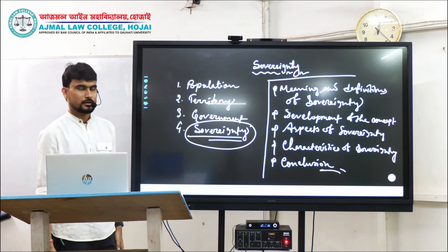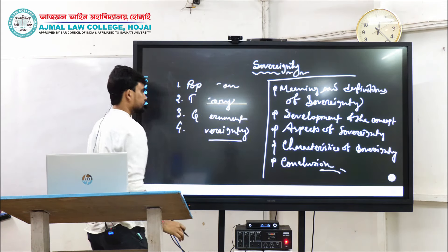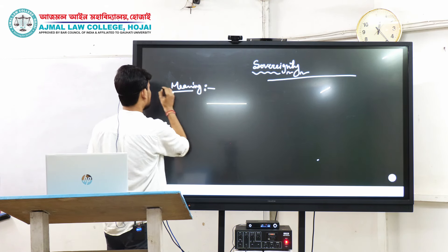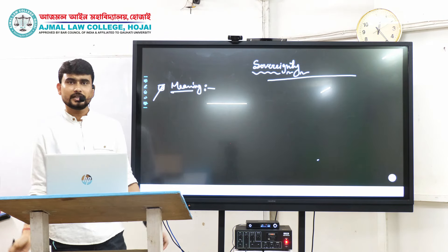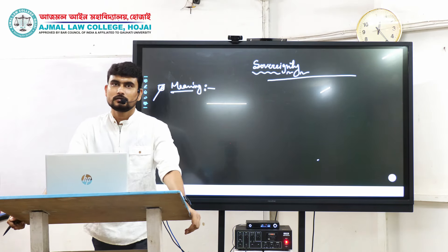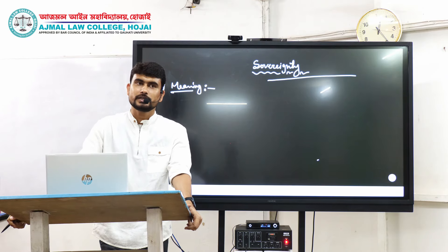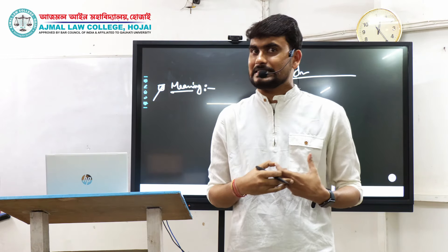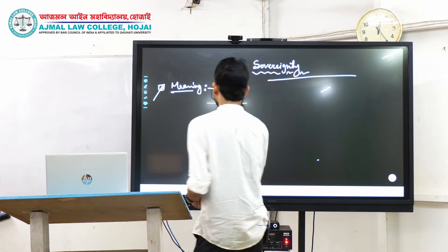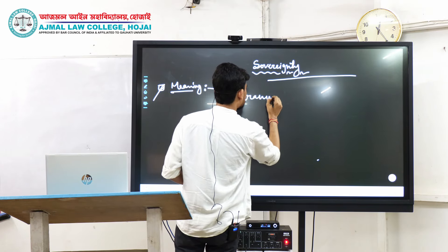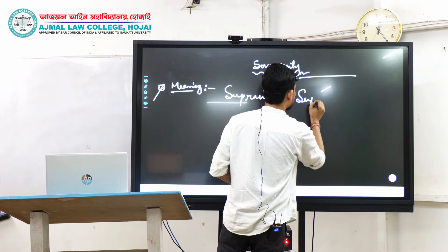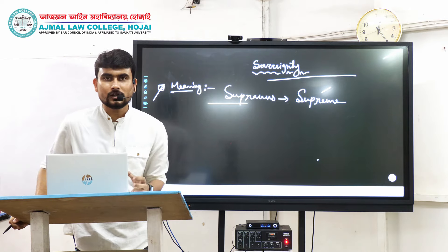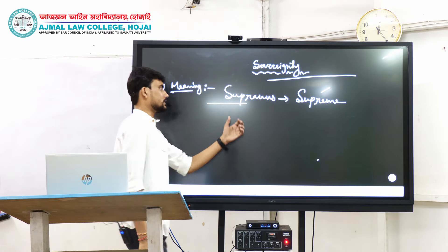These are the points we have to cover throughout our discussion. Let us start from the very beginning with the meaning of sovereignty. If we really want to know the meaning of sovereignty, we have to find out the root of this word. The word 'sovereignty' is derived from a Latin word called 'supremus,' which means supreme. So, in a nutshell, the literal meaning of sovereignty is the supreme power of a state.